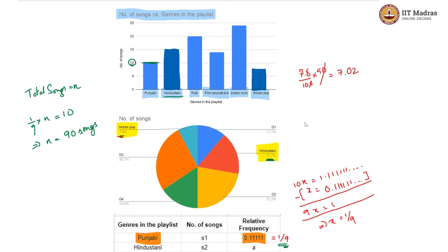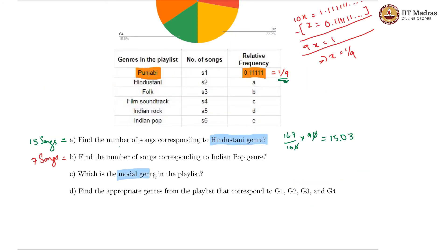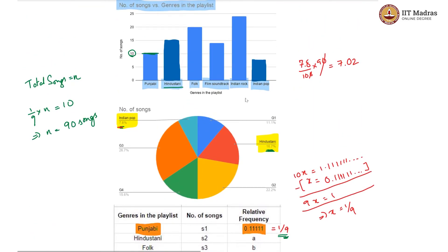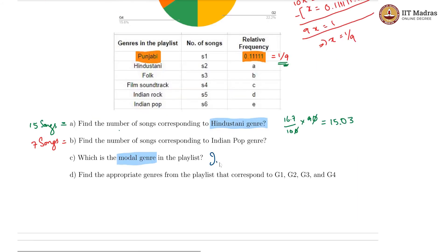Which is the modal genre in the playlist. We know that modal genre is the genre with most frequency. So here, that would be Indian rock. Evidently, Indian rock has the maximum. So this value must be about 24. It is a little less than 25, but it is definitely more than half of this particular line, considerably more than half of this. So it cannot be 23 either. So it has to be 24. Indian rock is our modal genre.